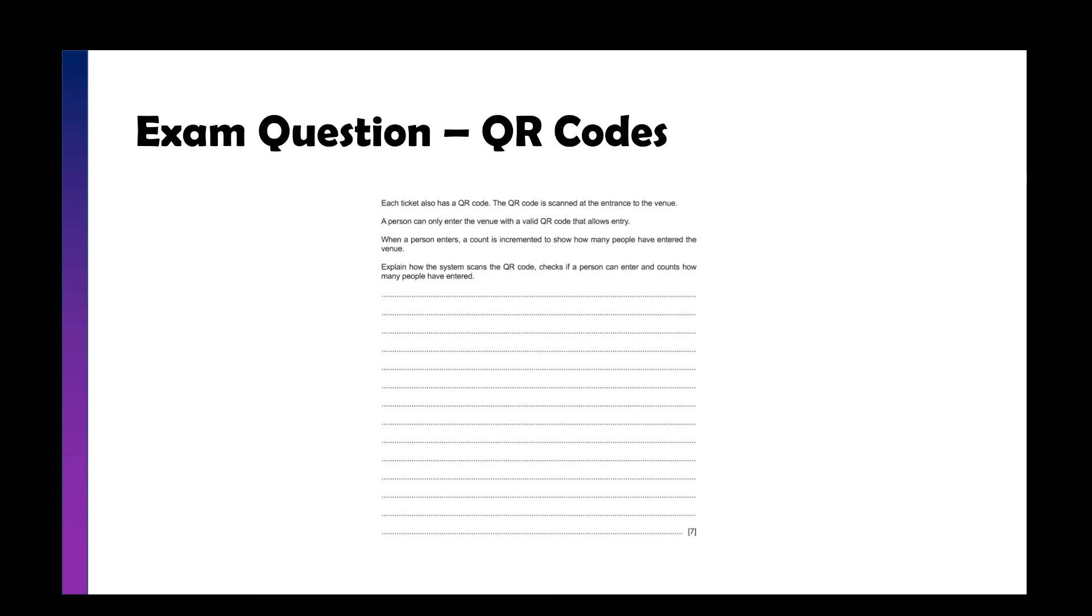So for that one, you're looking for an answer of, use a camera or a barcode scanner, but camera's probably the more obvious one, to scan the QR code on the ticket. This will then be checked against numbers in a database. So certain QR codes for each customer will bring up their details. If the QR code is valid, increase the counter to see how many people come and let them in. If it's not in a database, then reject their entry.